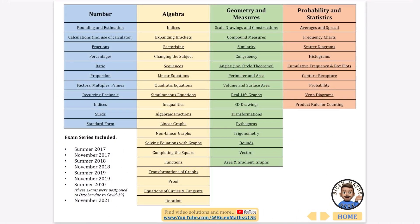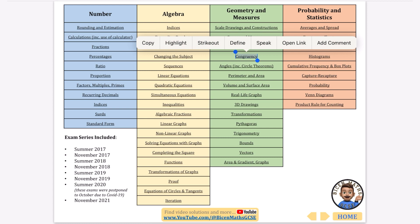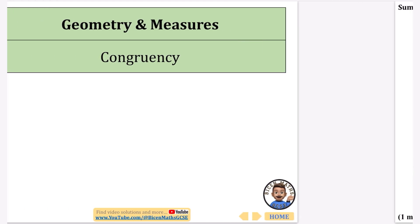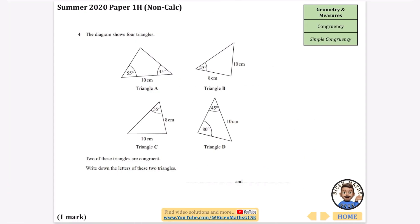In this video I'm going to be continuing every exam question that has ever been asked, and I'm going to be looking at congruency, which is all to do with shapes being exactly the same as each other. If you want to use the document it is linked in the description and it's fully hyperlinked. This is a non-calculator question and the diagram shows four triangles — two of these triangles are congruent, meaning they're exactly the same as each other. We need to write down the letters of these two triangles.